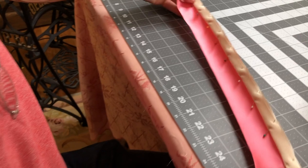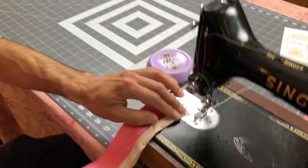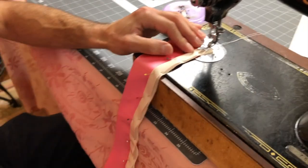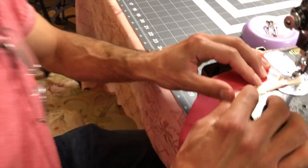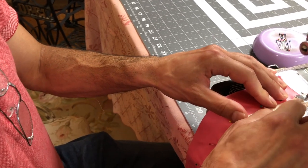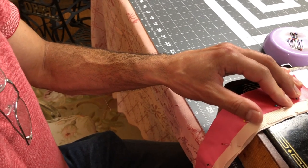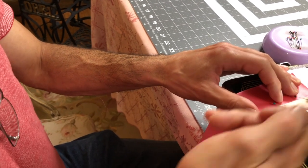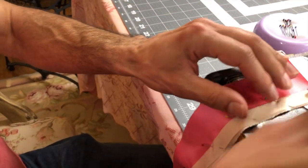We have it in place. On this side it should be like an eighth. So basically the sewing needle of the machine will go right in the center of the echo trim, right in the center.